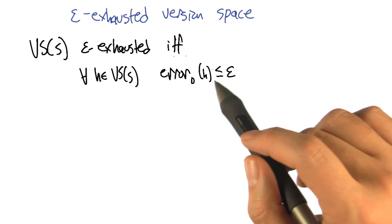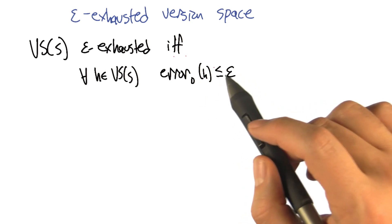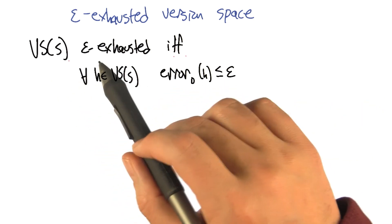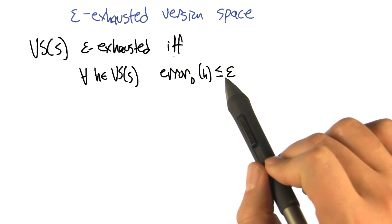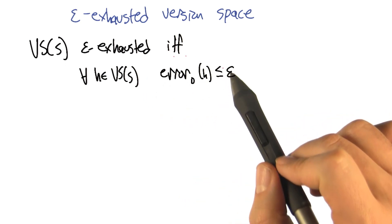And it could be a fairly high chance if there's, you know, say there's only two hypotheses left in the version space. One has high error and one has low error. We really have to make sure that the only things left in the version space have low error.